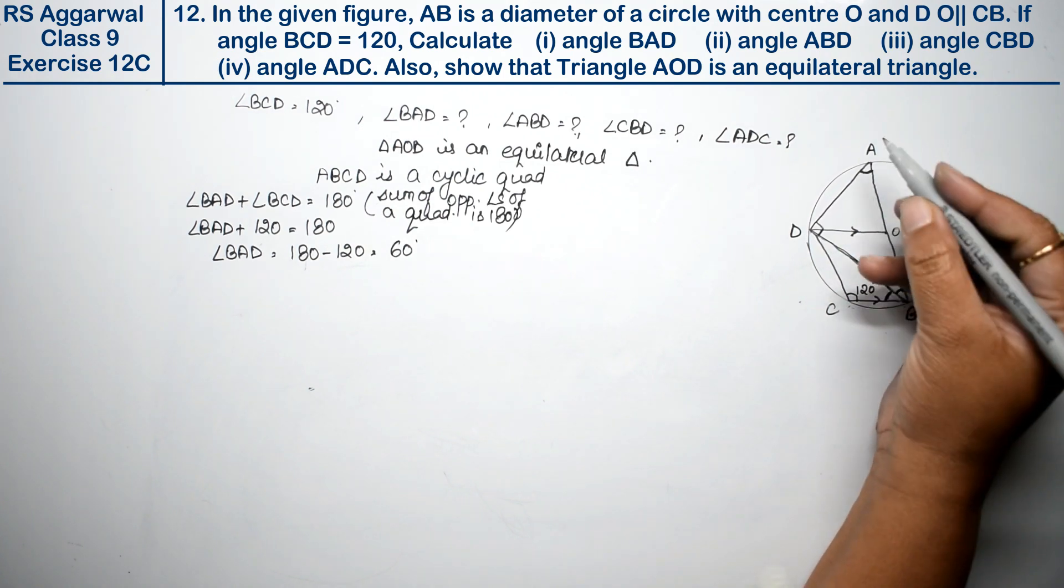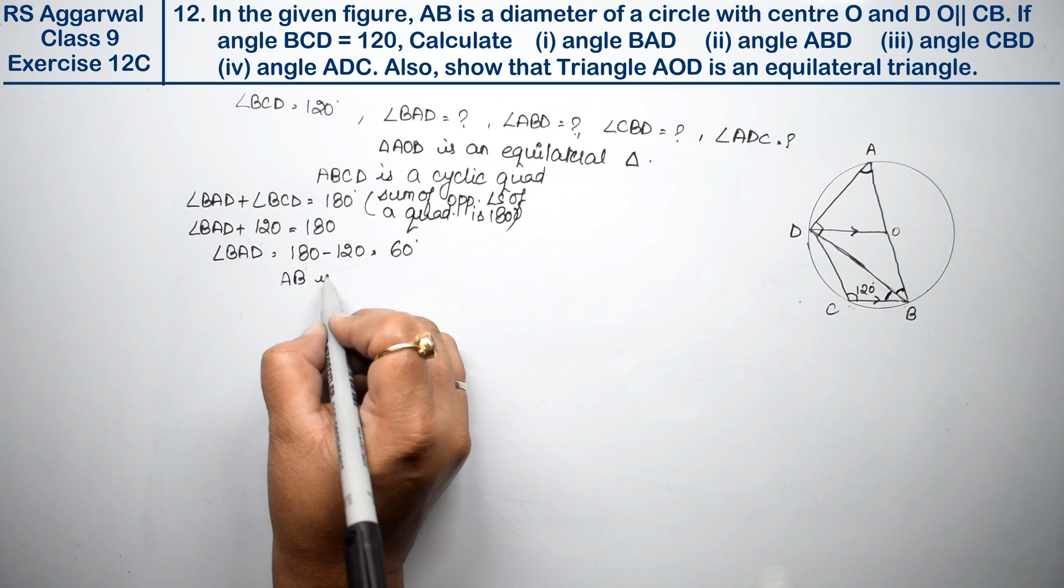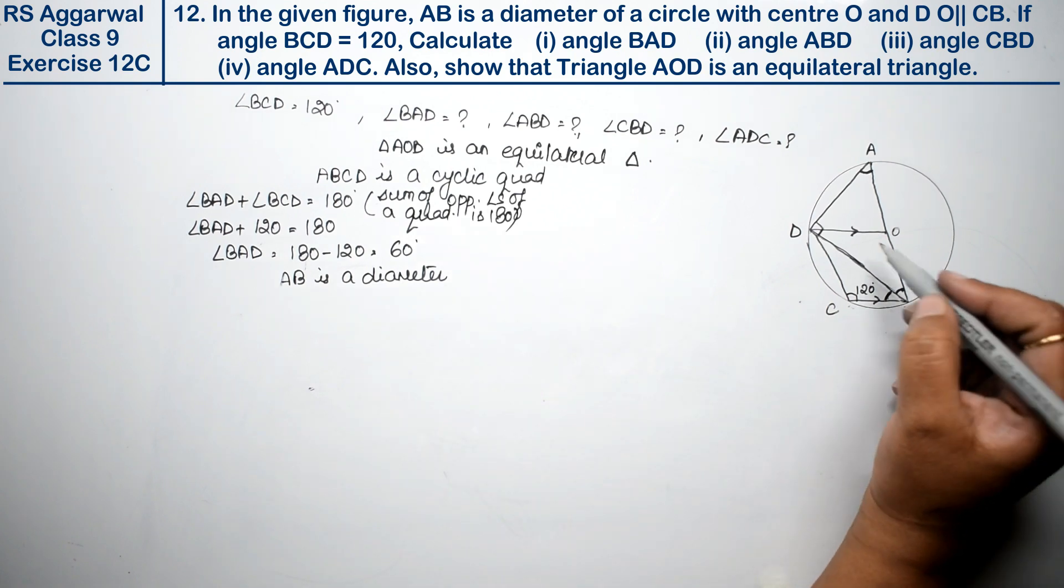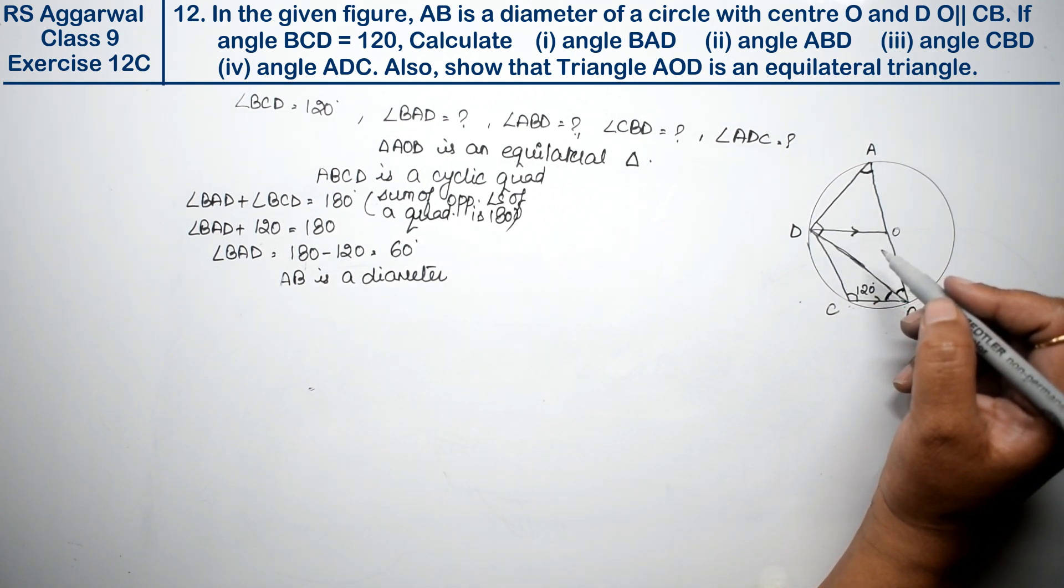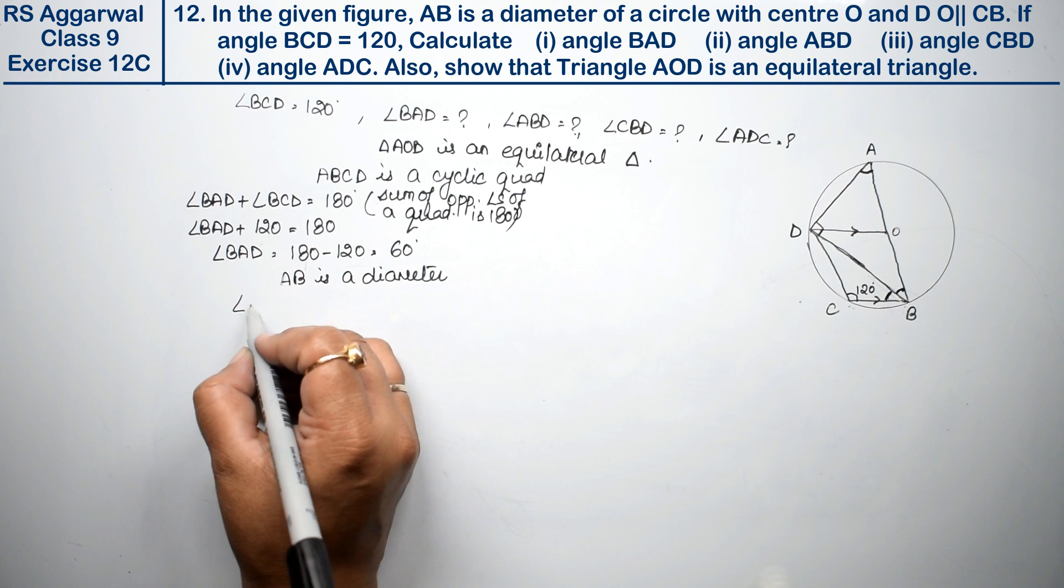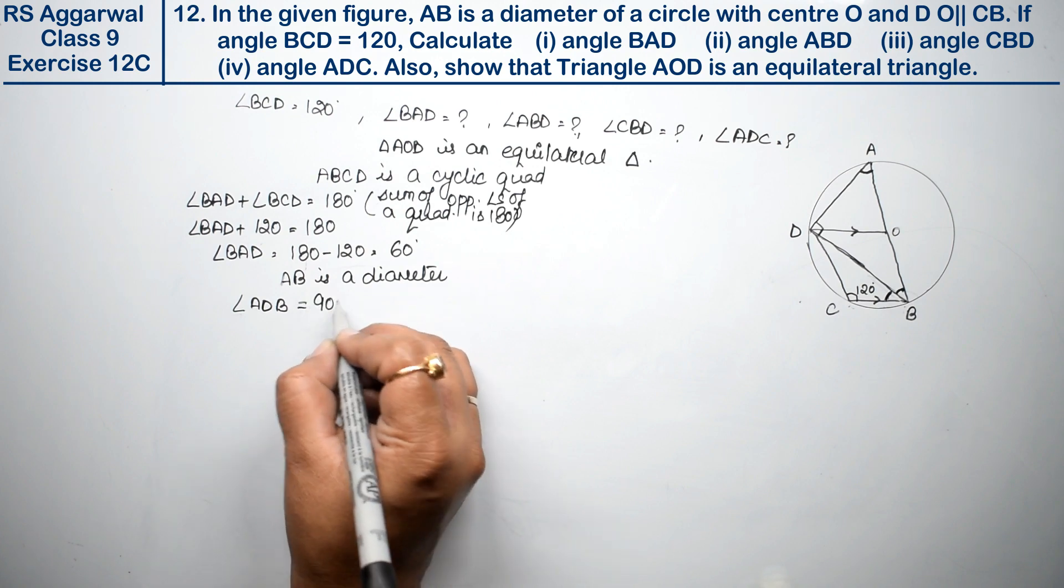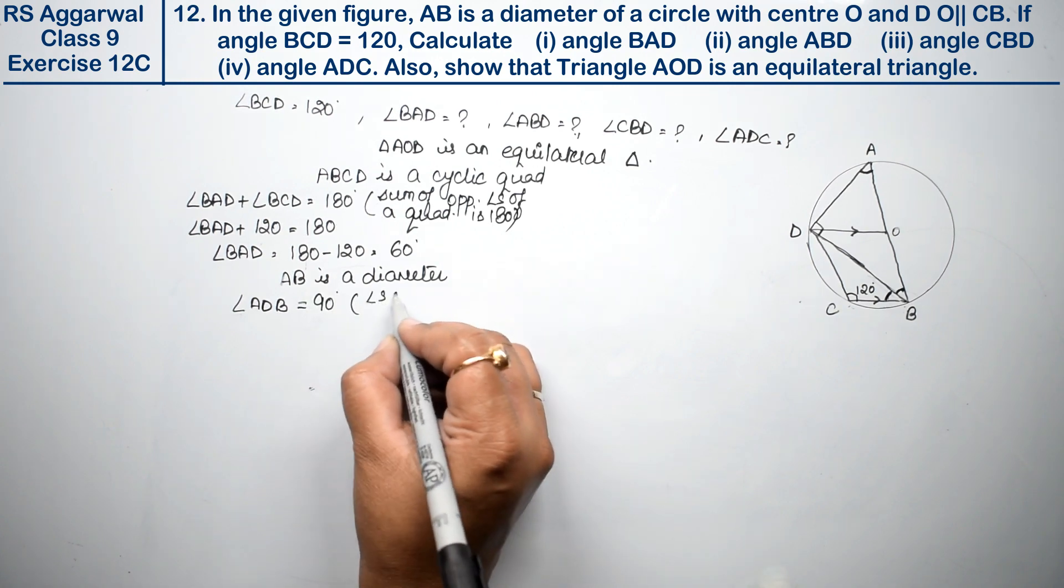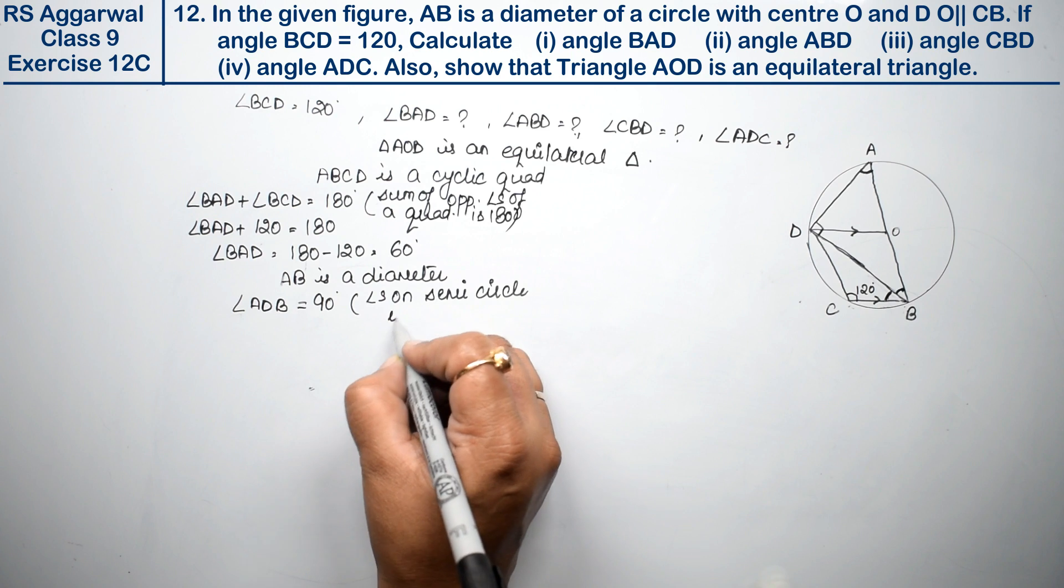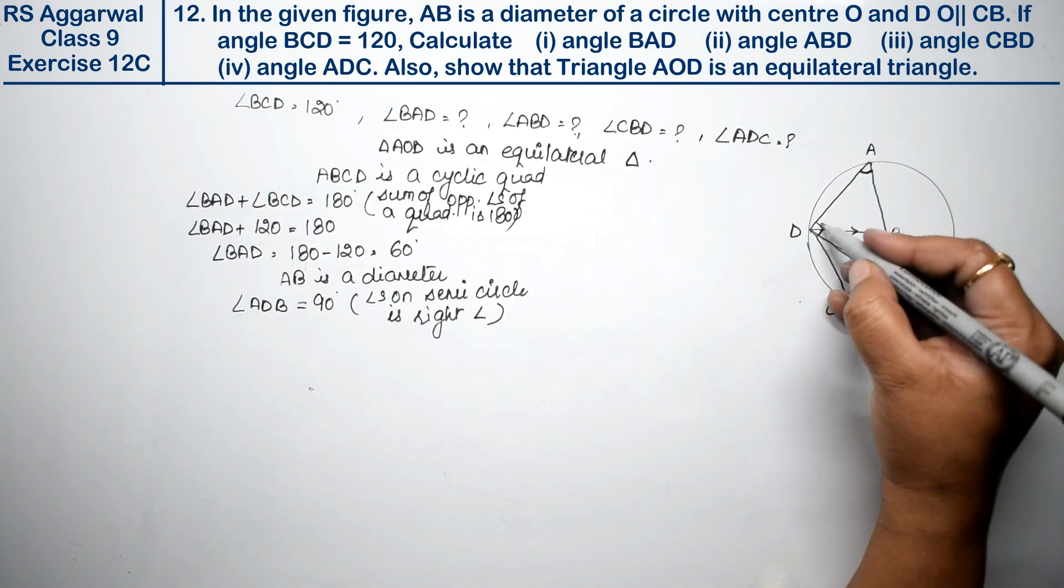Now, AB is a diameter. Angles on a semicircle are right angles, so angle ADB equals 90 degrees because angles on a semicircle form a right angle.